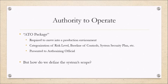In order to do this, they have to compile a set of documents — sometimes referred to as an ATO package — that contains system information. Things like a categorization of the system's risk level, a baseline of controls based on that risk level, system security plans, and other documentation such as a risk assessment. Once these are all compiled and brought together, they're presented to an authorizing official who determines if the level of risk associated with the information system is acceptable based on the implemented controls.